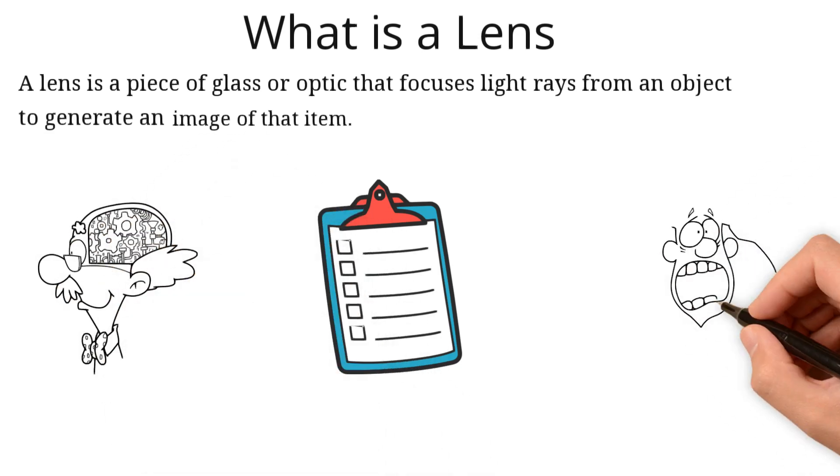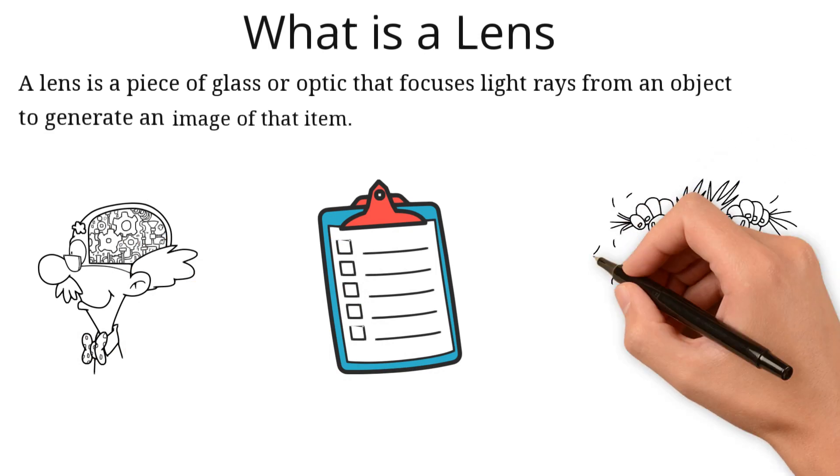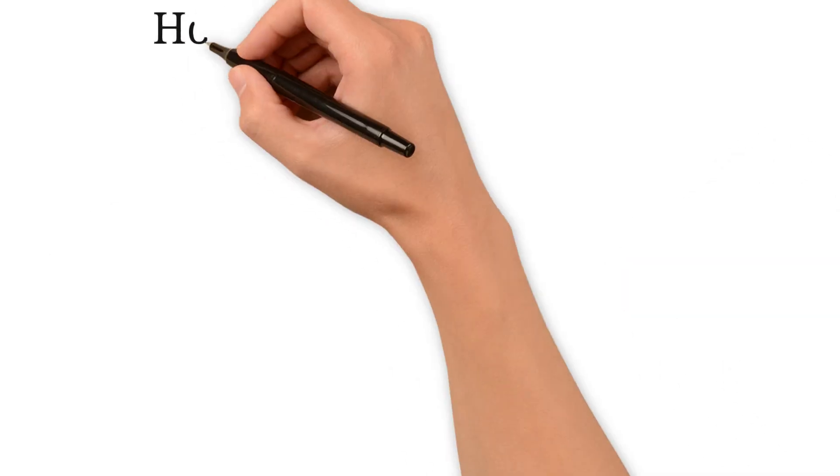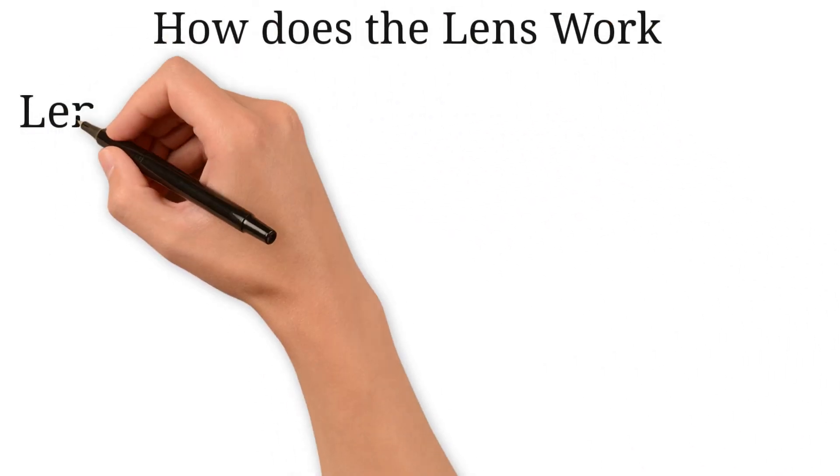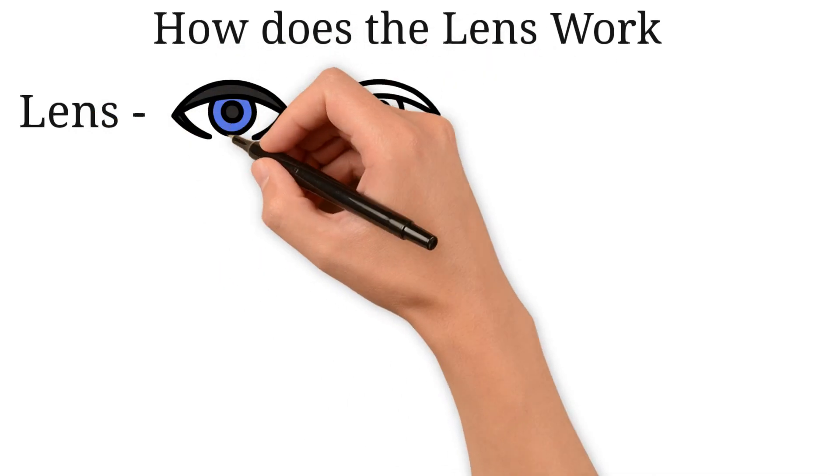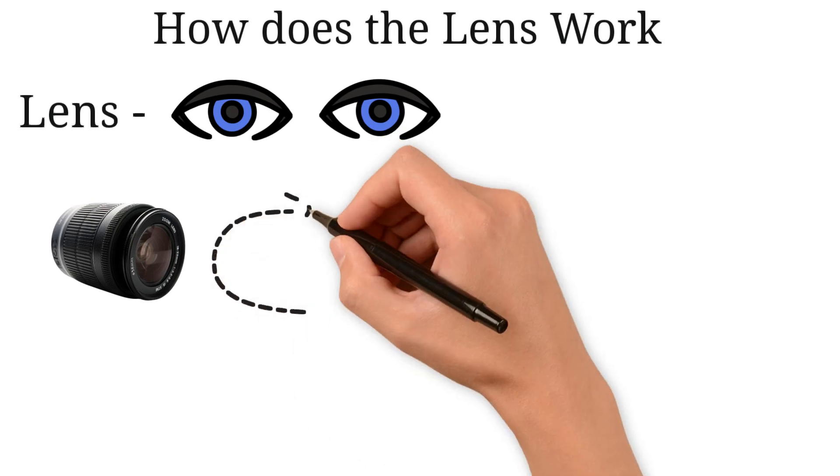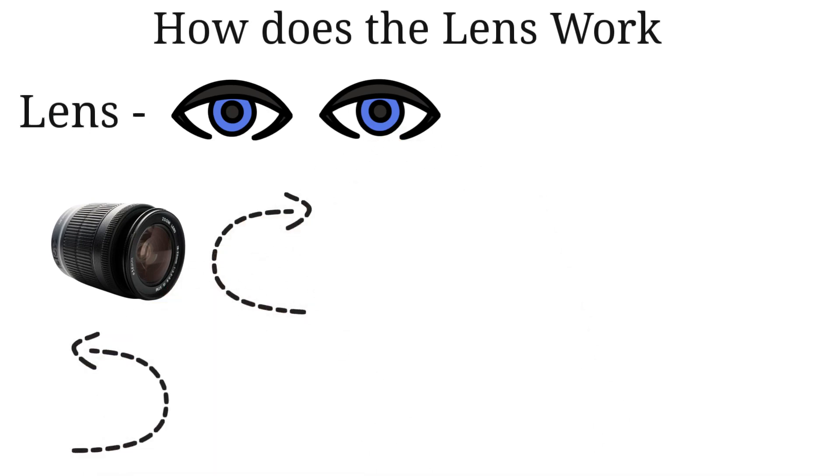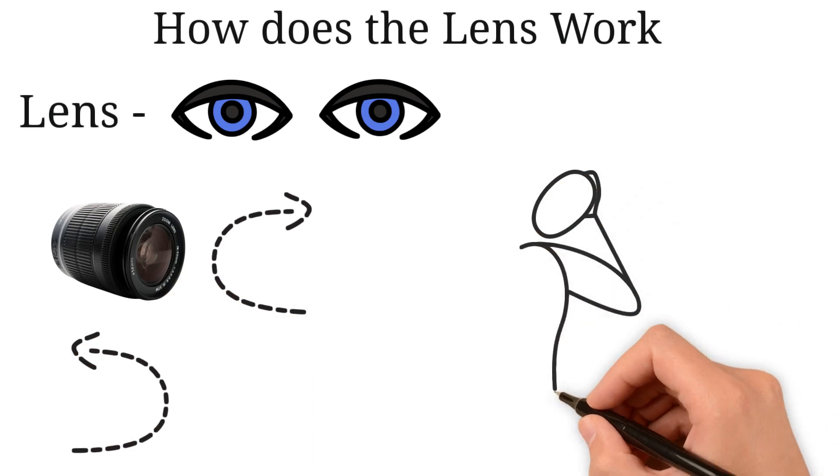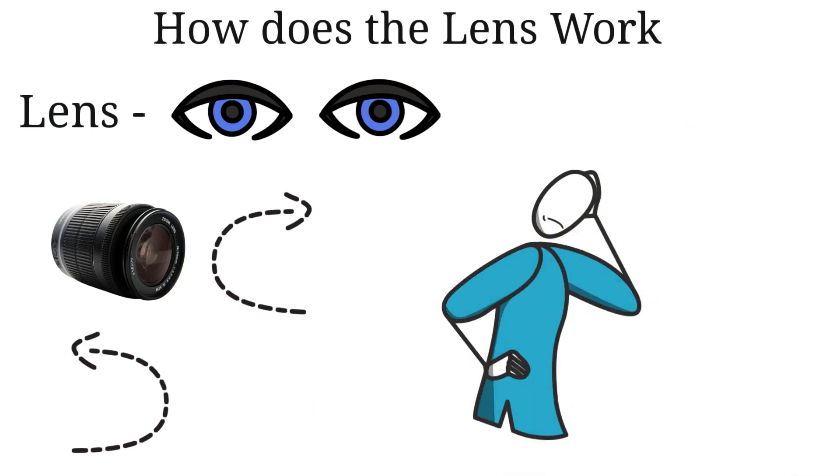How does the lens work? In a figurative way, a lens is what the eye pupil is to humans. Lenses can be concave or convex, and the images formed by a lens are determined by its shape. Let's get back to the main issue now that I've given you a general knowledge of lenses.